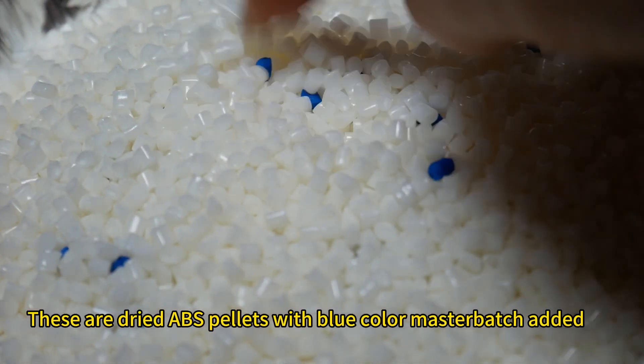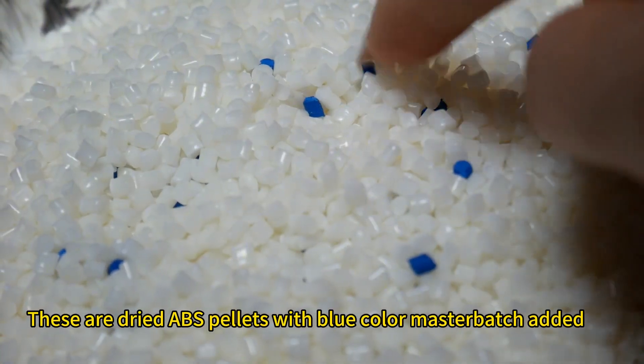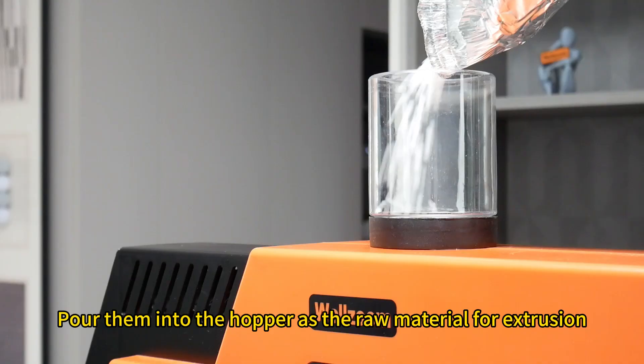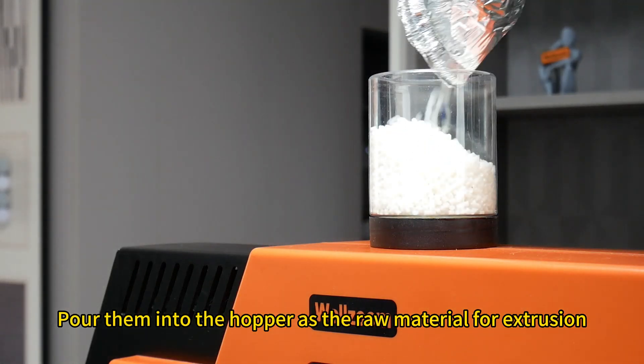These are dried ABS pellets with blue color master batch added. Pour them into the hopper as the raw material for extrusion.